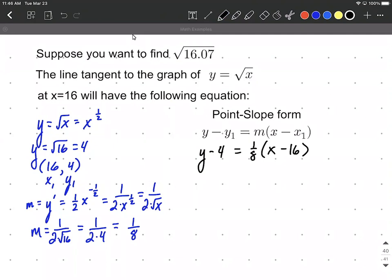So we have the equation of our line. Normally what we do is we get y on one side by itself, so I'm going to add the 4 to move it to the other side. So we have y equals one-eighth times (x minus 16) with a plus 4 at the end.